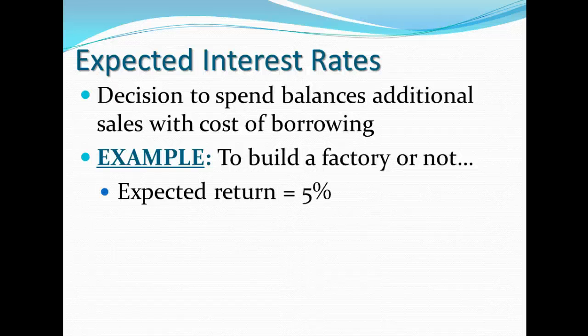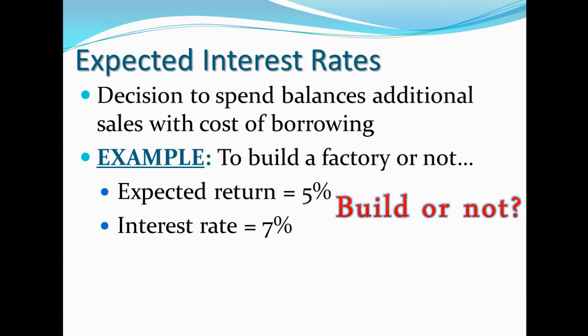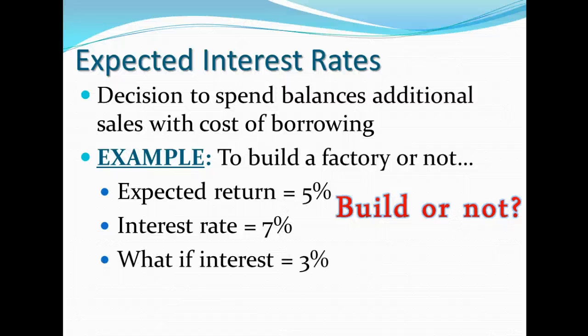Expected interest rates: essentially, if you're going to build a factory and you expect to make a 5% profit, but it costs you a 7% interest rate to borrow the money, then there is a question as to whether you would actually borrow. You could just loan your money out to someone else at 7% and make more money. On the other hand, if the interest rate is 3%, you would make more money expanding your factory. So the interest rate has a lot to do with whether businesses spend money.